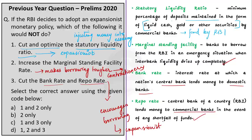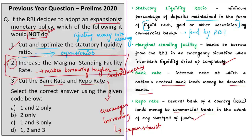Read the question carefully: it asks which of the following the RBI would NOT do under an expansionist policy. That means it will not do number two, and it will do one and three. The question asks what it would not do, and that is why the correct answer is option B, two only — not option C. So even after decoding the question, read it once again before marking your final answer to avoid mistakes.